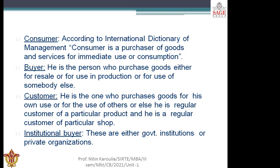A buyer is the person who purchases goods either for resale, for use in production, or for the use of somebody else. A customer is the one who purchases goods for his own use or for the use of others, or is a regular customer of a particular product or shop. Institutional buyers are either government institutions or private organizations — they normally buy products in bulk. For example, TVS company buys many parts such as batteries — Amron or Exide or Luminous — from other organizations. These fall into the category of institutional buyers.